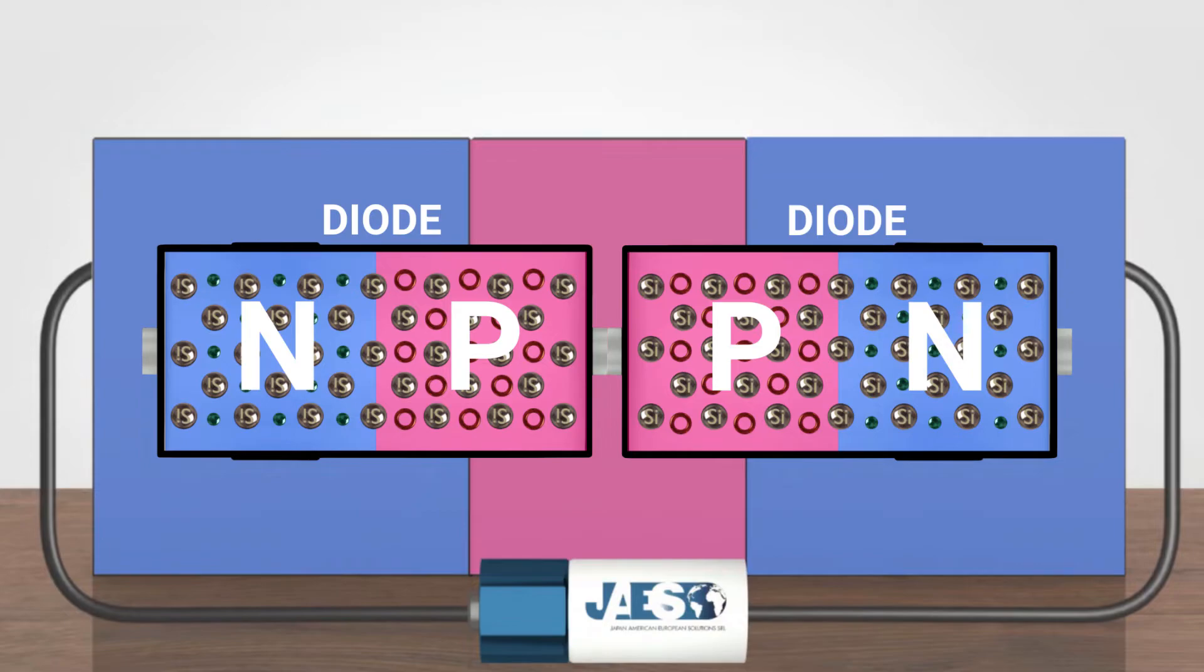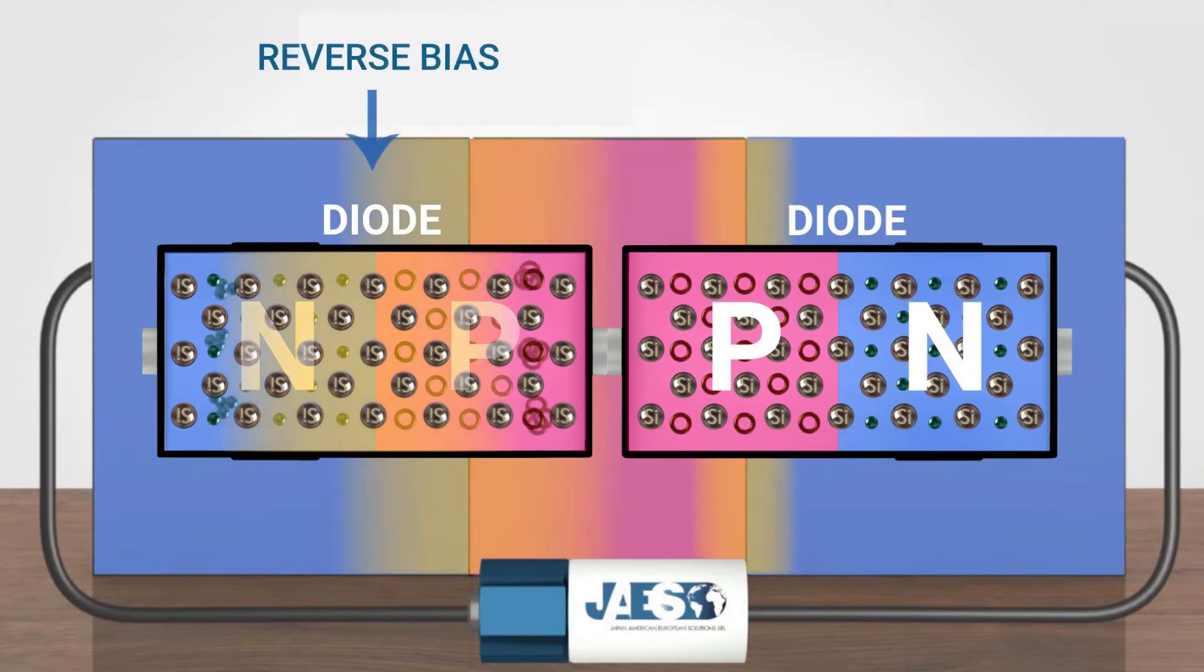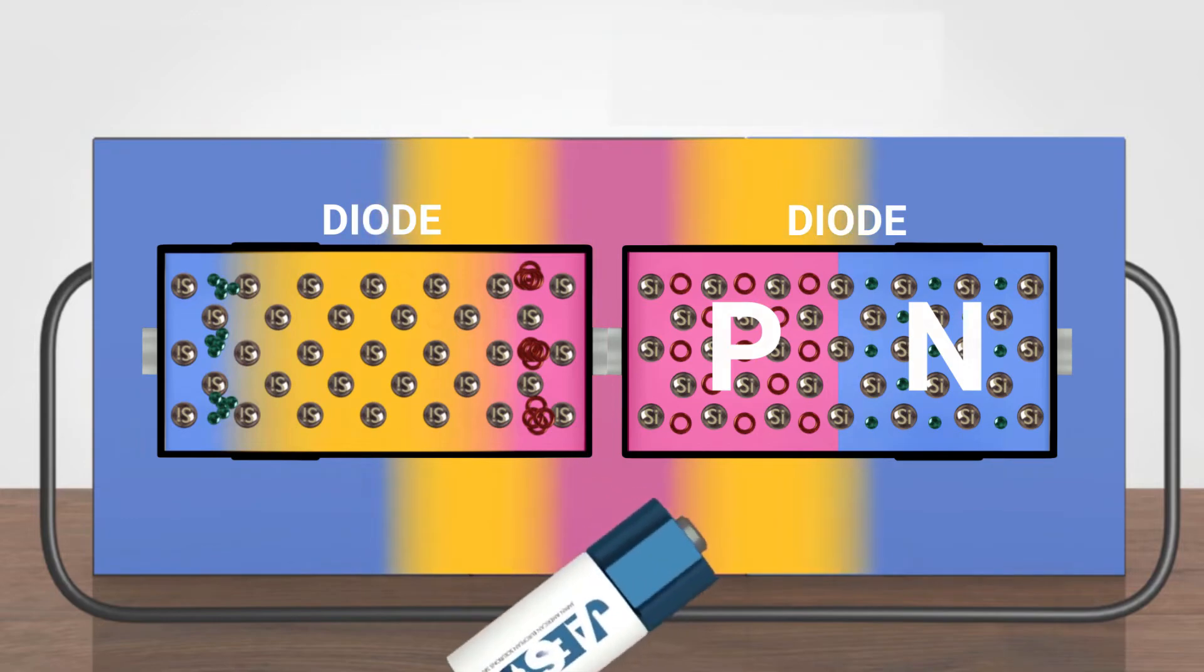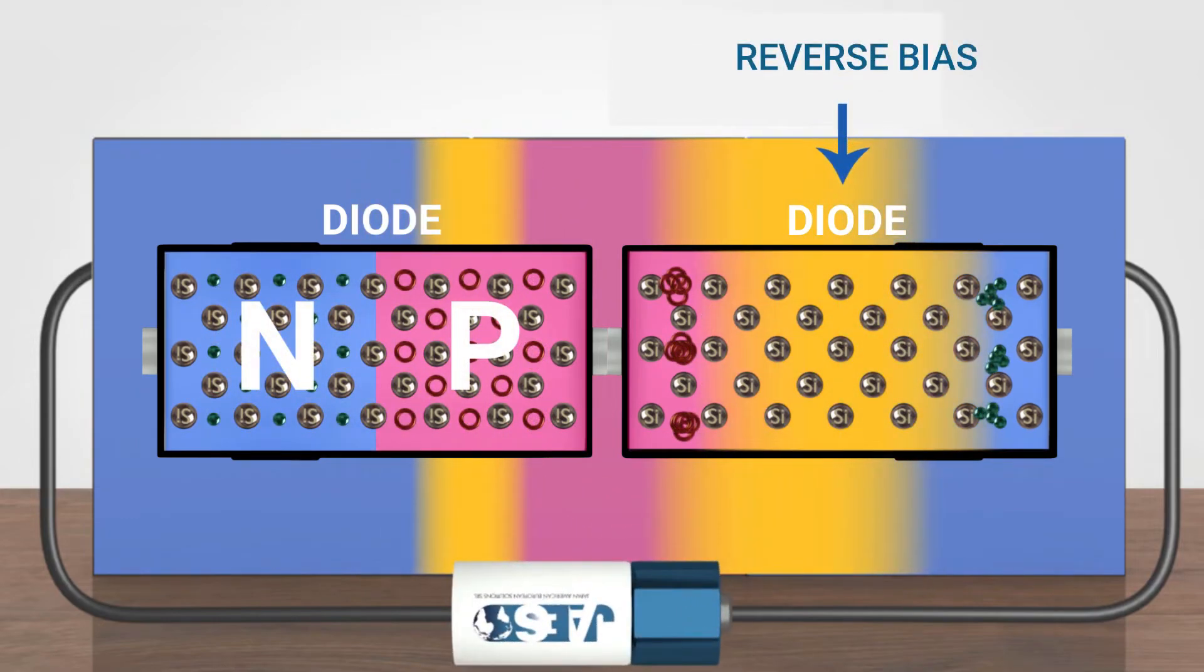So, in any way we connect the battery, one of the two diodes will always be in an inverse bias condition. By increasing its depletion region, one diode will always block the current flow. By blocking the current flow, the transistor is turned off.